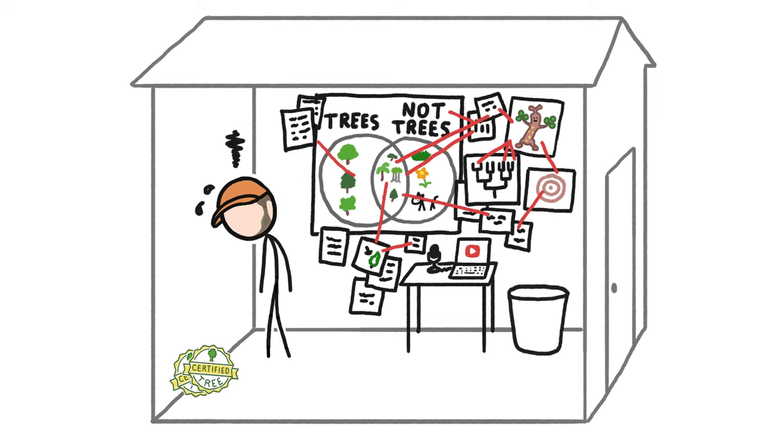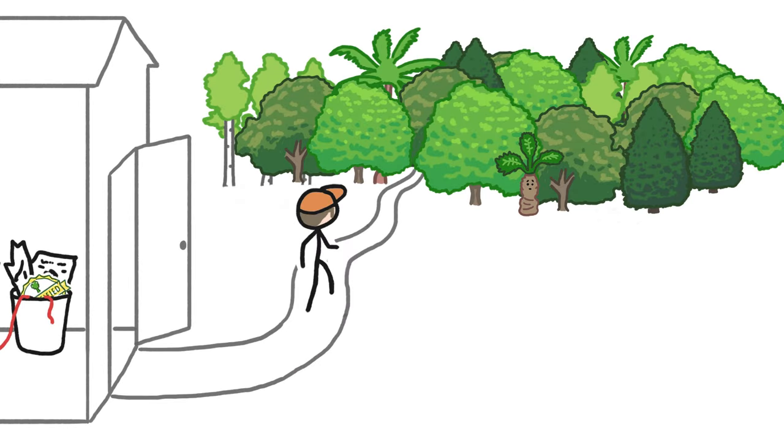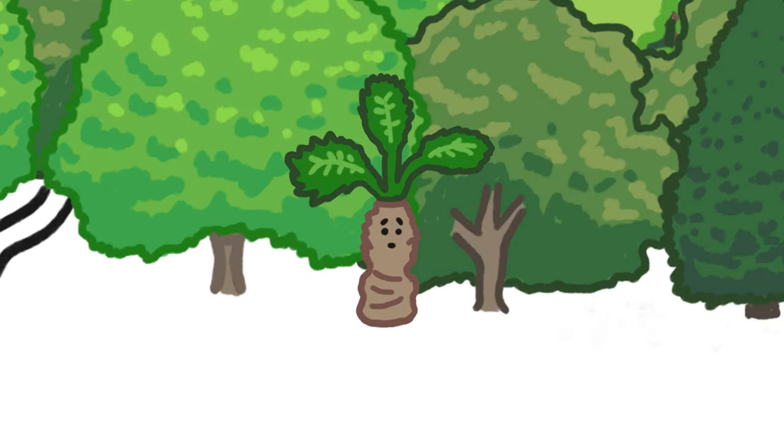But nature and language are tremendously messy, so maybe it's good for us to be able to tolerate a bit of uncertainty. Otherwise we might miss the forest for the—hmm, wait, is that a tree?